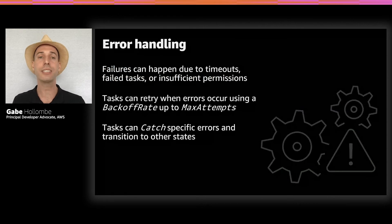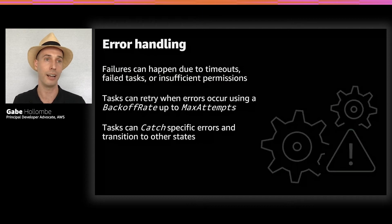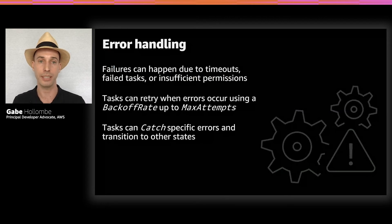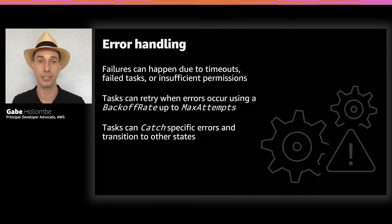Errors can also happen as you're orchestrating your services — timeouts or failed tasks are not uncommon with distributed services, and some things will fail eventually. You really want to have robust retry capabilities and the ability to meaningfully branch out for certain types of errors in your state machines and do different things in response. Step Functions can handle that for you in a really nice fashion.